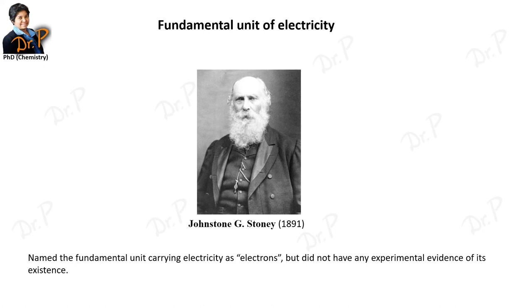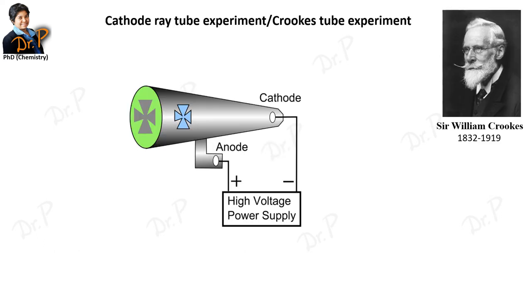The next important name is Johnston Stoney, who named the fundamental unit of electricity as the electron, though he had no experimental evidence for its existence. It is important to remember that Stoney is not credited for finding the electron — he is credited only for naming it. The person credited for finding the electron is J.J. Thomson, whose findings we will look at later.